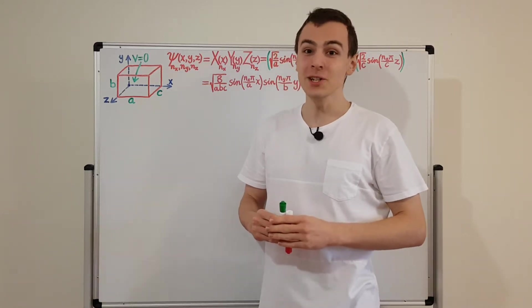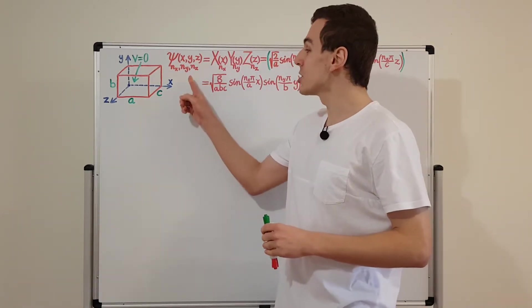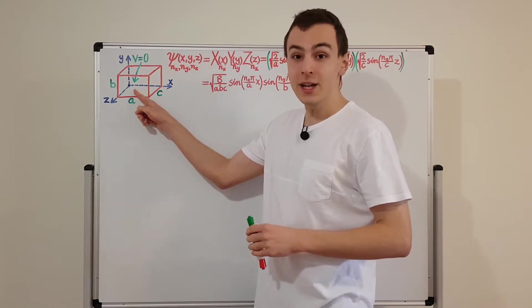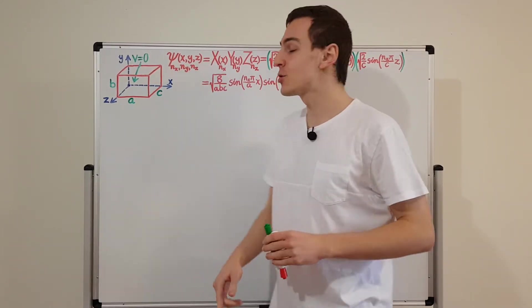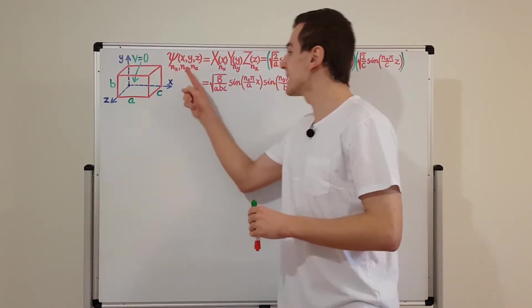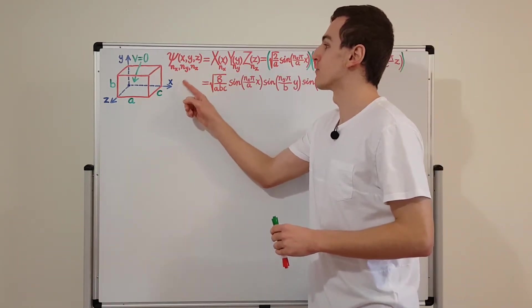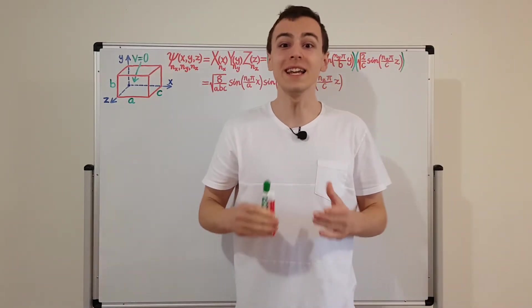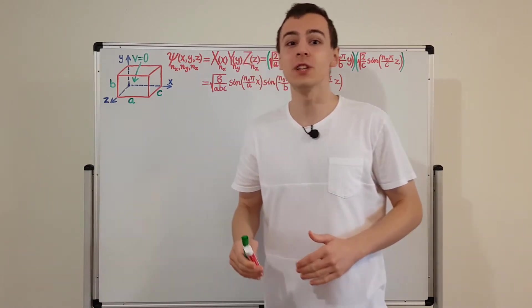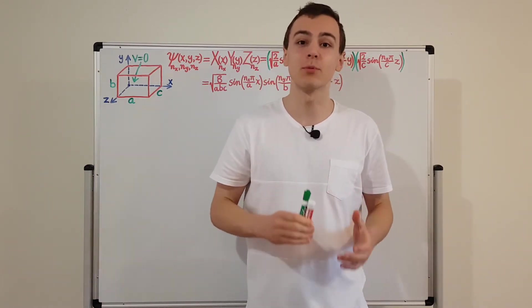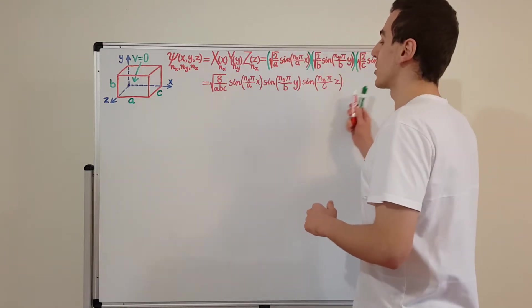Let's verify the normalization condition for the wave function of a particle in a three-dimensional rectangular box. I derived this expression for the wave function in the previous video. I started with the time-independent Schrödinger equation, and then I used the method of separation of variables to create this expression.